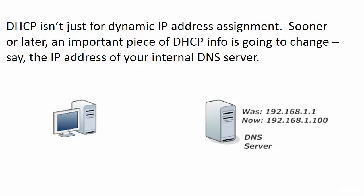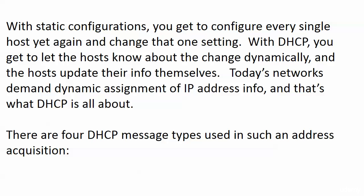DHCP is not just for that initial dynamic IP address assignment. Sooner or later, an important piece of all the information that DHCP gives our host is going to change. For example, the IP address of our DNS server is changing from 192.168.1.1 to 192.168.1.100. With static configurations, we'd have to go back to every single host to change that one setting. But with DHCP, we get to let the hosts know about this change dynamically — the hosts update the information themselves. In today's networks, you've got to have this dynamic assignment and dynamic update potential.